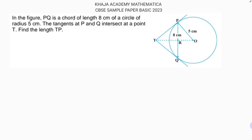PQ is a chord of length 8 centimeters of a circle of radius 5. The tangents at P and Q intersect at a point T. Find the length TP. I will consider TP as x. Here, PQ is a chord, and if a perpendicular is drawn from the center it will bisect the chord, so each half is 4.